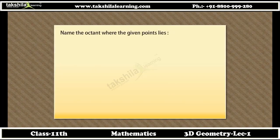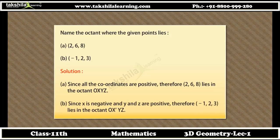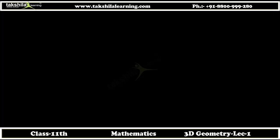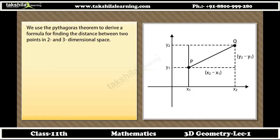Example: Name the octant where the given points lie — (2, 6, 8) and (−1, 2, 3). Solution: Since all the coordinates of (2, 6, 8) are positive, therefore (2, 6, 8) lies in the octant OXYZ. Since X is negative and Y and Z are positive for (−1, 2, 3), therefore (−1, 2, 3) lies in the octant OX'YZ.